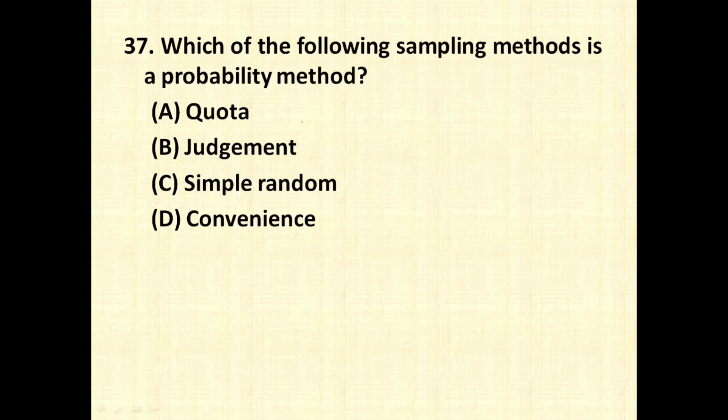Which of the following sampling method is a probability method. In sampling, we have two types of methods, probability based method and non-probability based method. In probability based method, we have simple random sampling, systematic sampling, multi-stage sampling, cluster sampling and stratified sampling. In case of non-probability sampling, we have quota sampling, judgment sampling, convenience sampling, accidental sampling, snowball sampling. So in this question, probability based sampling is simple random sampling.